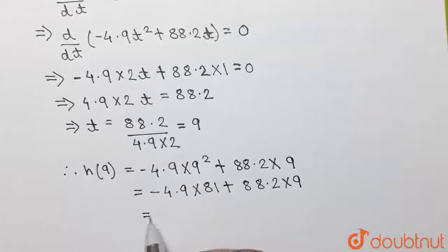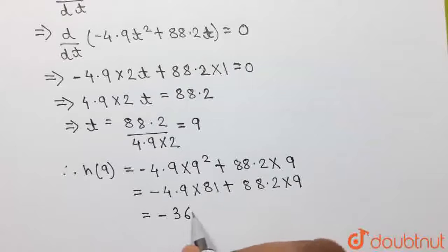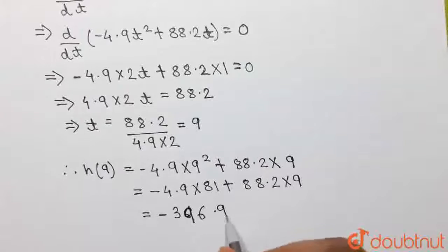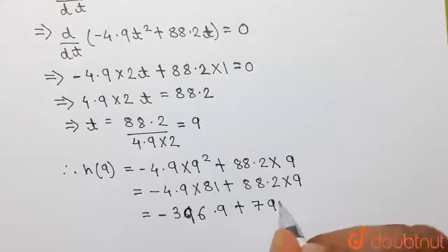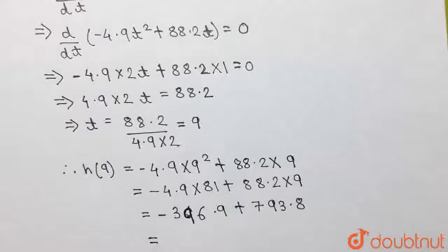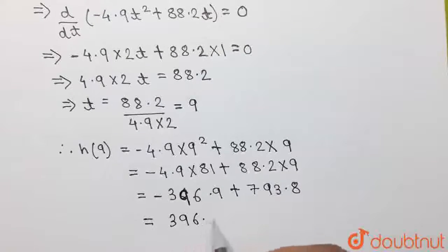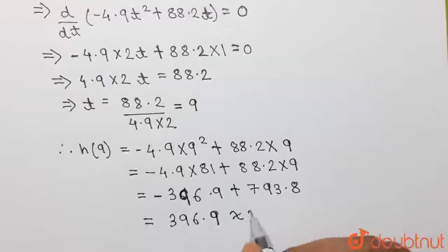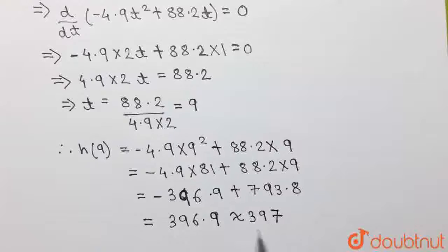Now, -4.9 × 81 can be calculated using a calculator. This will come out to be -396.9, and 88.2 × 9 will come out to be 793.8. And this difference when calculated using a calculator comes out to be equal to 396.9. And this value of 396.9 can be approximately written as 397, and this is the final answer.